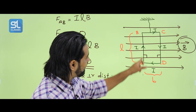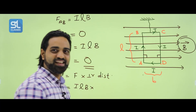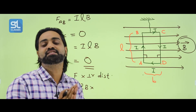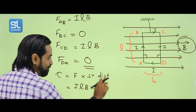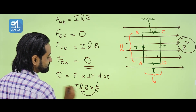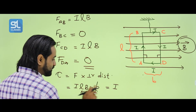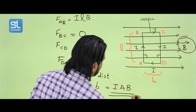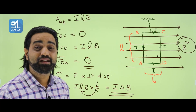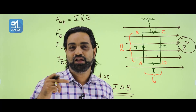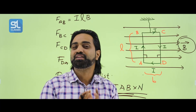Torque equals force into perpendicular distance. Force is ILB. The perpendicular distance between the forces is the breadth. So torque = ILB × breadth. Length into breadth is the area. Therefore, torque = I × A × B. For N turns, torque = NIAB.